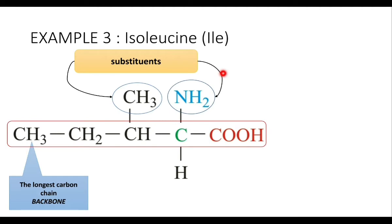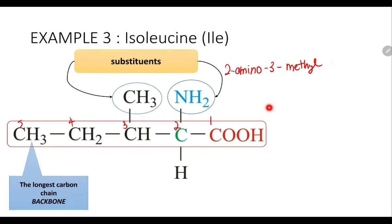For isoleucine, the longest carbon chain contains five carbons — so it's pentanoic acid — with the amino group on the second carbon and a methyl group on the third carbon. Arranging substituents alphabetically: the IUPAC name is 2-amino-3-methylpentanoic acid.